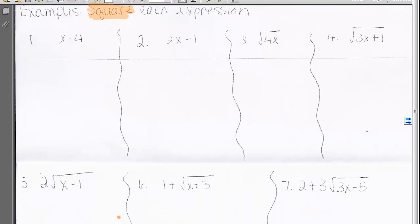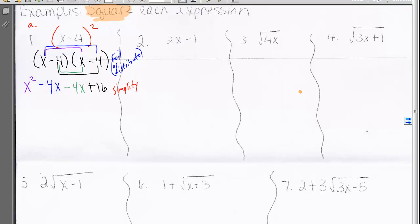Let's look at some examples. Example 1, x minus 4. This is type A. When we square it, we get x minus 4 times x minus 4, so we distribute over all terms using FOIL. That gives us x squared minus 4x minus 4x plus 16. We simplify by combining like terms. We get x squared minus 8x plus 16.